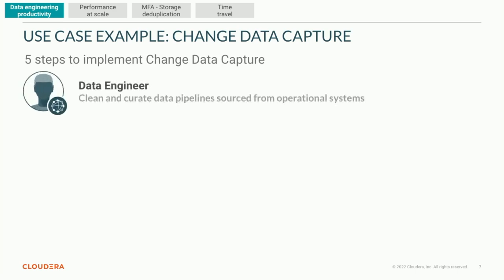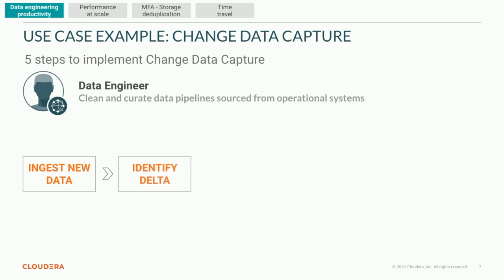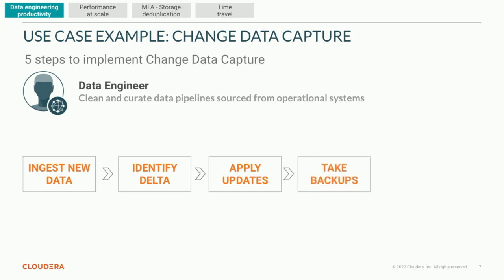The data engineer wants to build clean and curated data pipelines coming from operational systems. The first thing we do is ingest new data, then identify any changes between the new data and the existing data — this is all about change data capture. We don't want to always re-ingest from the source; we just want to capture the changes and implement them in the destination so our warehouses and data lakes stay as up-to-date as possible. We identify the delta, apply the updates, then take backups and revert if there are any issues. This is our typical lifecycle.